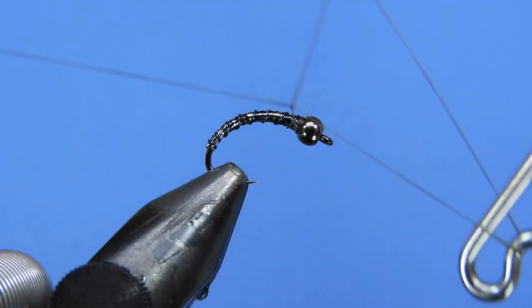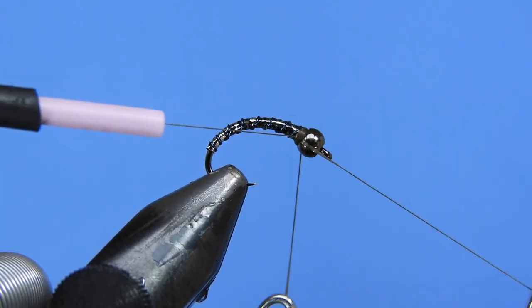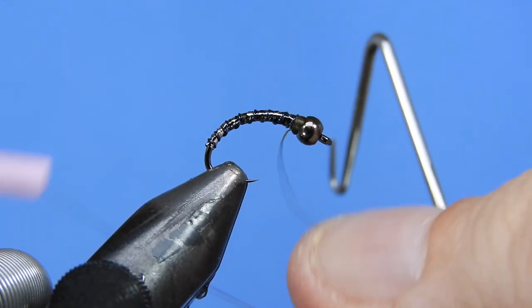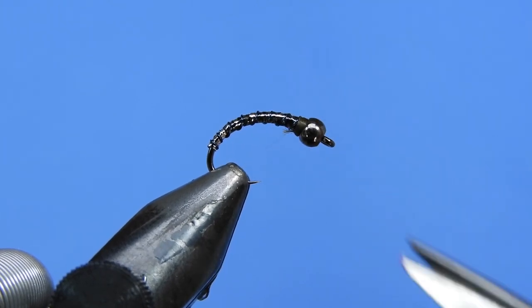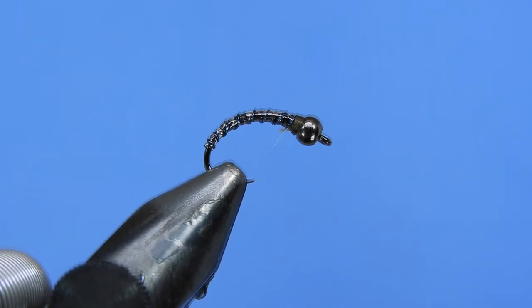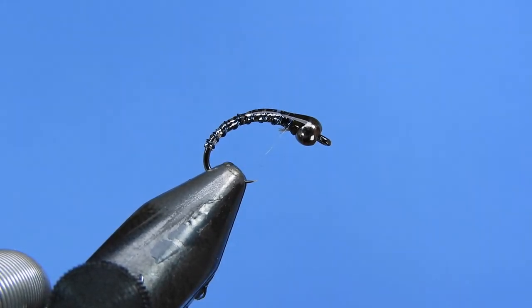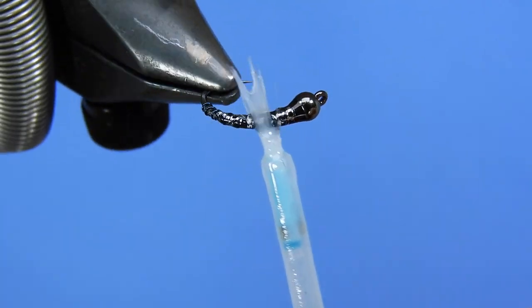Go ahead and we'll whip finish the fly. And you can see kind of building up a little bit of a thorax. So if you want that to stick out, you can use a lighter colored thread here like a brown or a wood duck, makes for a nice contrast. We'll go ahead and we'll brush on a thin coat of the bone dry UV resin.